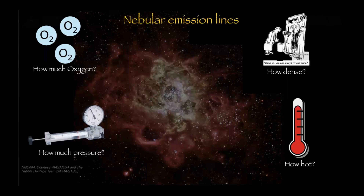Now that we have computed the flux from the area under the Gaussian, we need emission line diagnostics — new tools to convert these fluxes into meaningful physical properties. Let's take a small break here for questions.